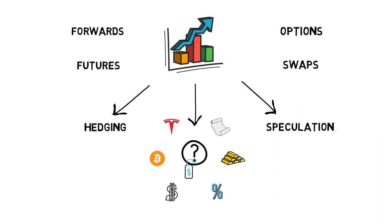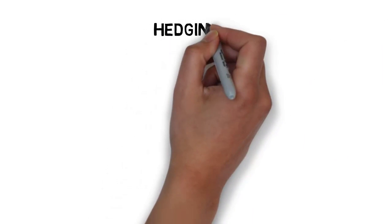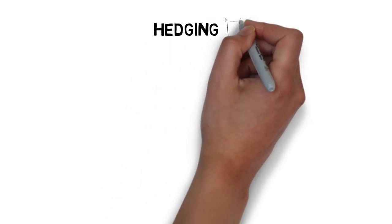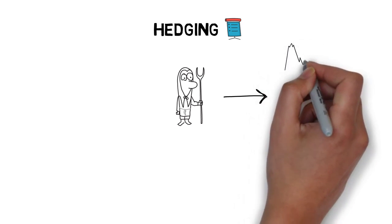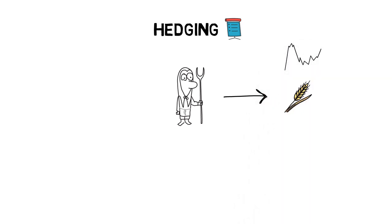Hedging allows for managing financial risks. To understand hedging a bit better, let's revisit one of the commonly used examples. Imagine a farmer that primarily focuses on growing wheat. The wheat price can fluctuate throughout the year depending on the current supply and demand.